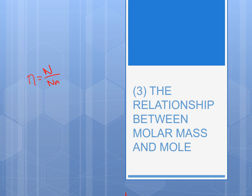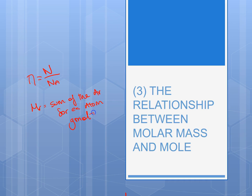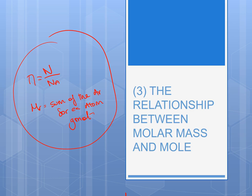We also looked at how to calculate the molar mass. So MR of something is equal to the sum of the relative atomic masses from our periodic table for each atom. It's given the unit grams per mole because it is the mass that one mole of substance would weigh. These are the relationships we have so far. Now we're going to look at the relationship between molar mass and mole.